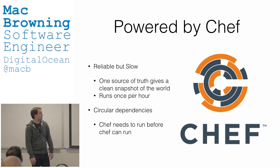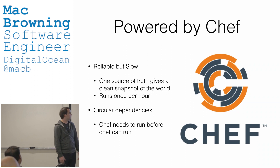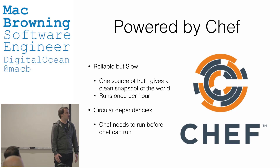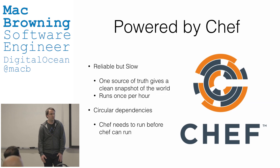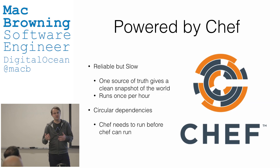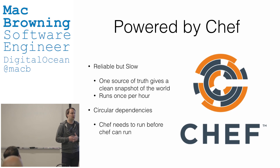Right now the first version of service discovery at DO is Chef. We use a lot of Chef at DO and it gets overloaded in a lot of cases. Chef is actually pretty good — it's reliable but it's really slow. It's reliable because we have one source of truth that gives a very consistent snapshot of the world at any given time. But because of the scale at which we run our Chef setup, we can only do one converge per node per hour.